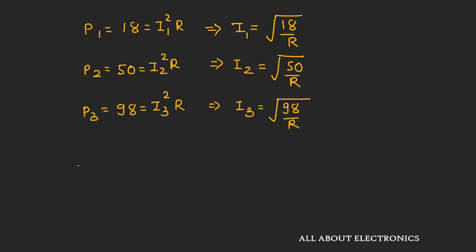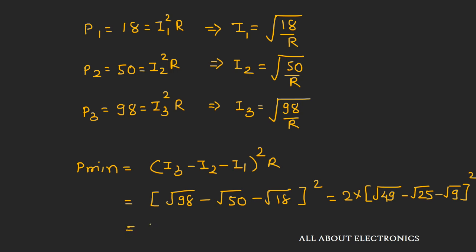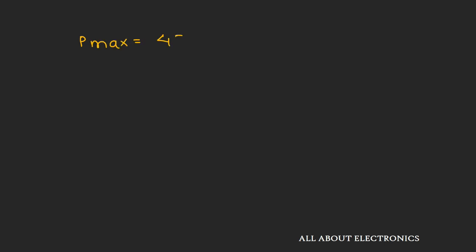For the minimum possible power, P_min = (I3 − I2 − I1)² · R = (√98 − √50 − √18)² = (2·√49 − 2·√25 − 2·√9)² = [2(7 − 5 − 3)]² = [2(−1)]² = 2 watts. So the maximum possible power is 450 watts and the minimum possible power is 2 watts.